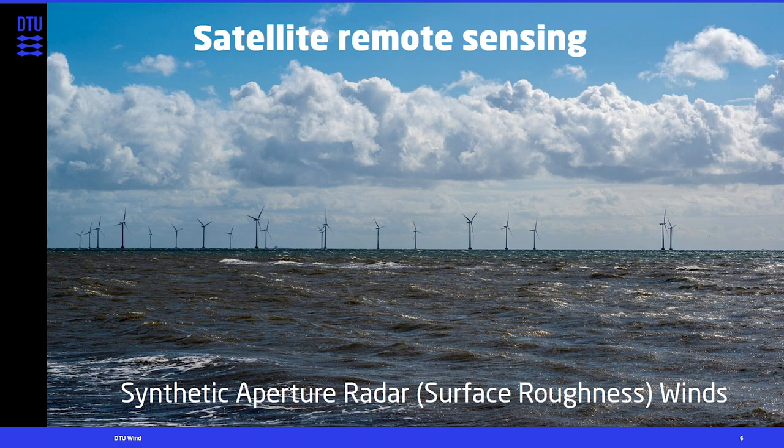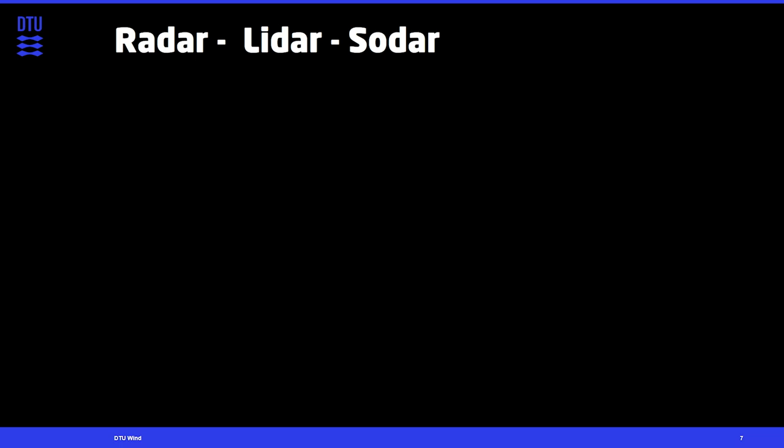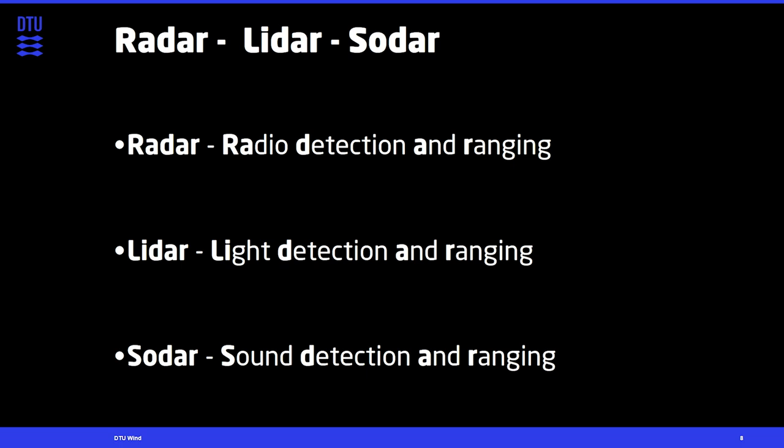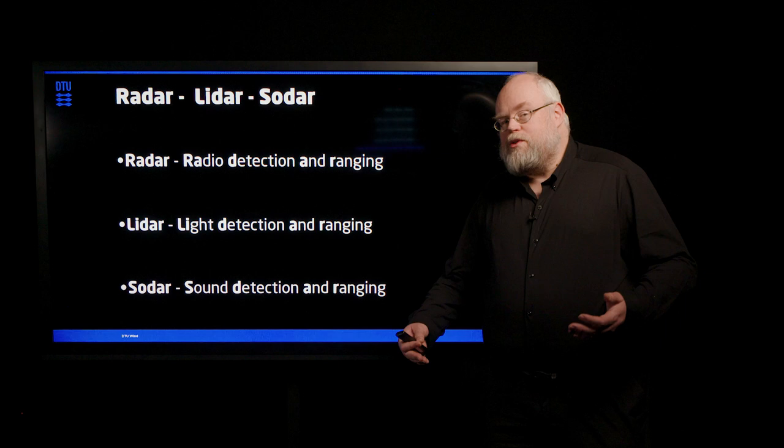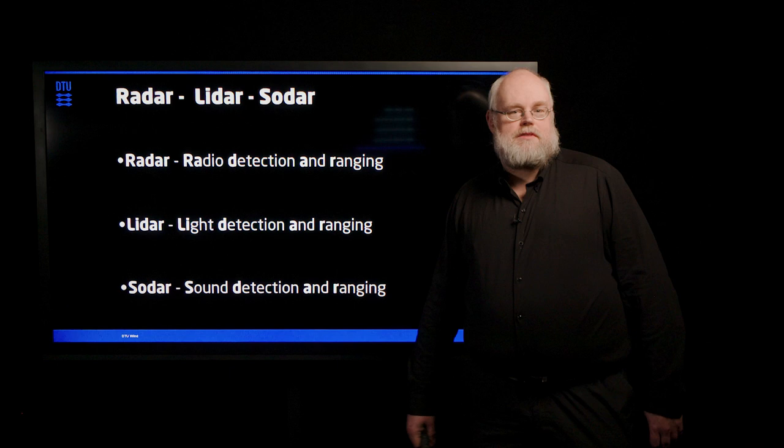But I just mentioned the word radar. So let's look a little more about that. All these are remote sensing devices. And they have a structure of the name in common. They all end with the detection and ranging. They are all using waves. But different kinds of waves. The radar and lidar are using electromagnetic waves, radio and light waves. And the sodar is using sound for doing these kind of measurements. And they all rely on the Doppler effect.